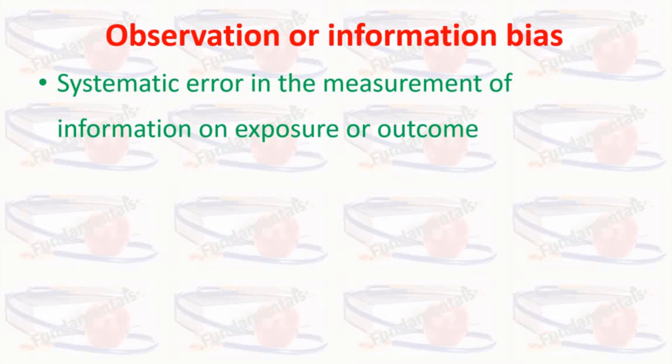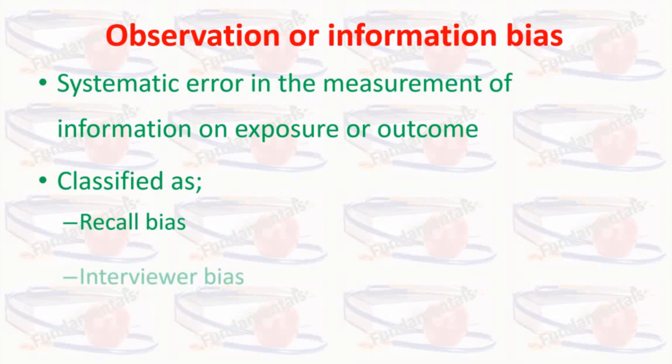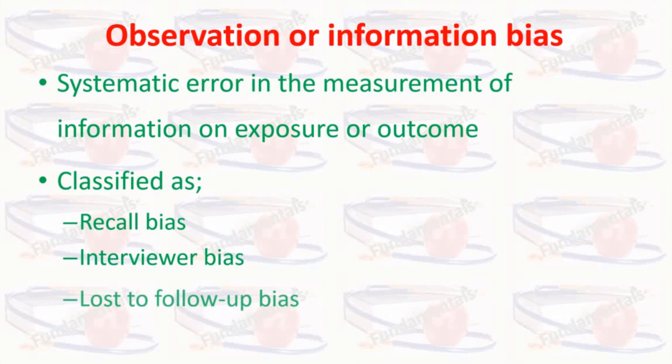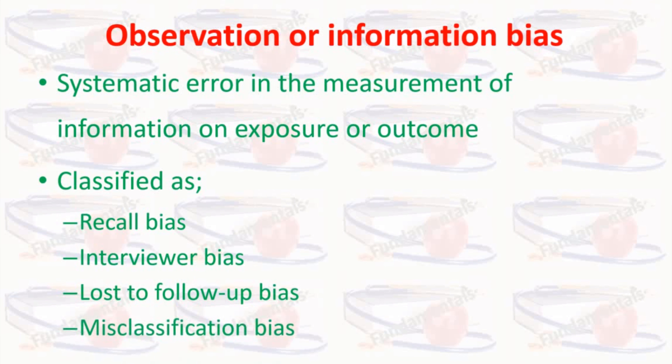Observation or information bias is any systematic error in the measurement of information on exposure or outcome. It is further classified into different categories based on the source of non-comparability: recall bias, interview bias, loss to follow-up bias, and misclassification bias.